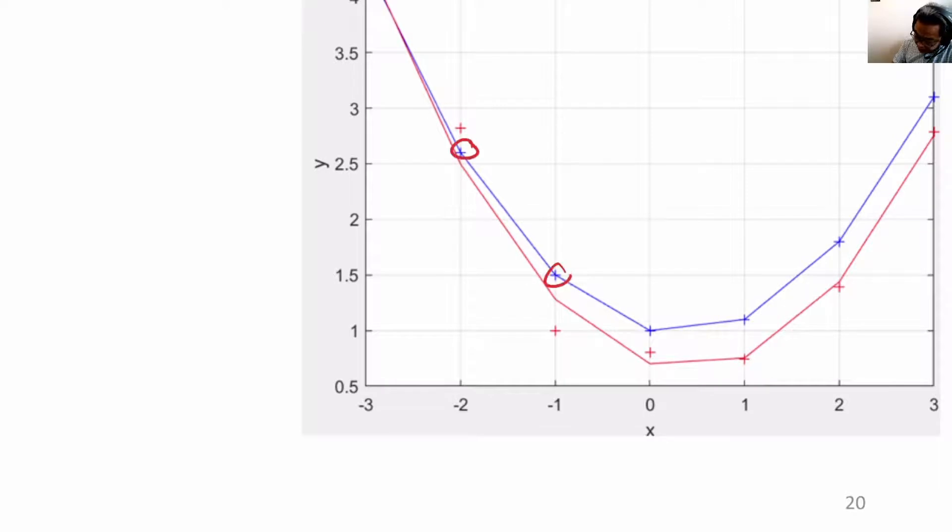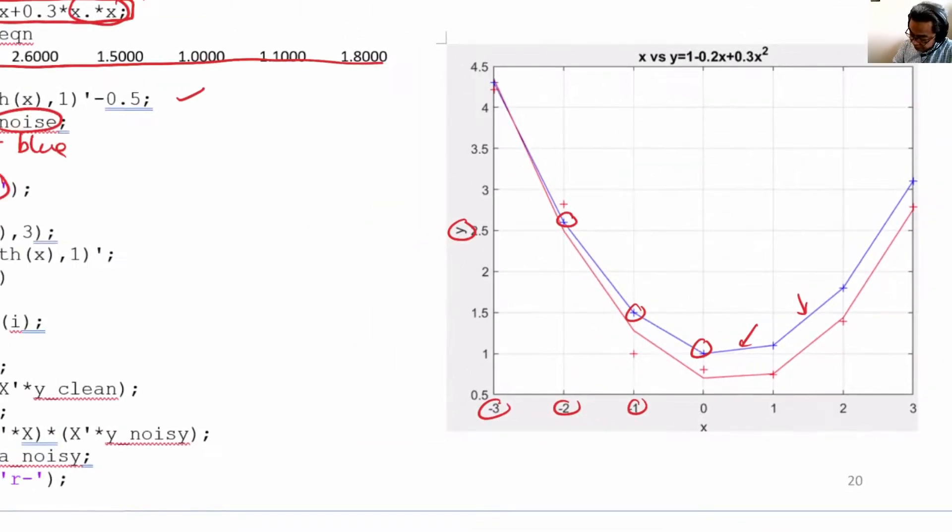The crosses are the points where we have the x's and the y's. The blue line in between is just MATLAB drawing a line through all the points for you; it doesn't actually exist.